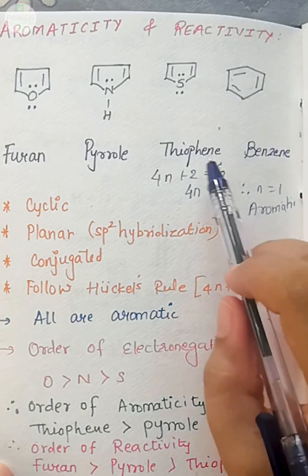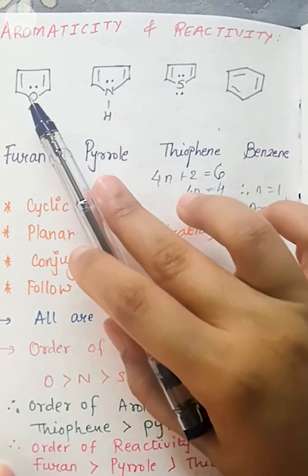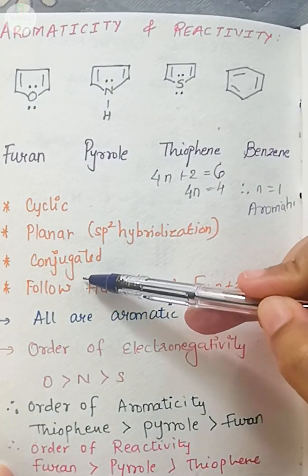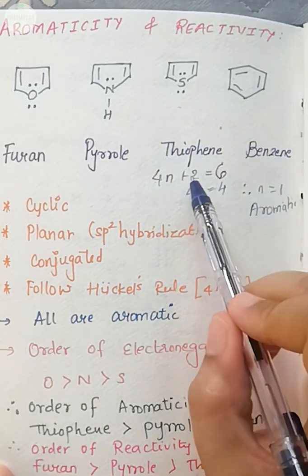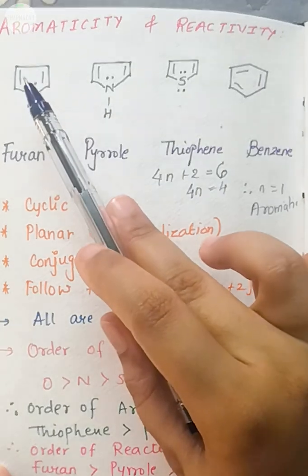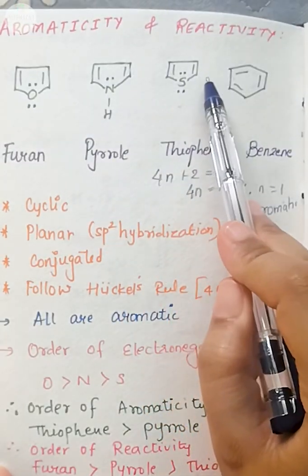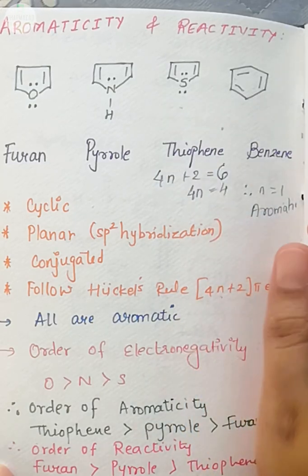Now if I apply the same rule for these molecules, these molecules follow the same criteria. So we can apply this rule. So 4n plus 2 equals, if you can see all these molecules, there are 2 double bonds, correct? So now these 2 double bonds, how many pi electrons are? 4 pi electrons.